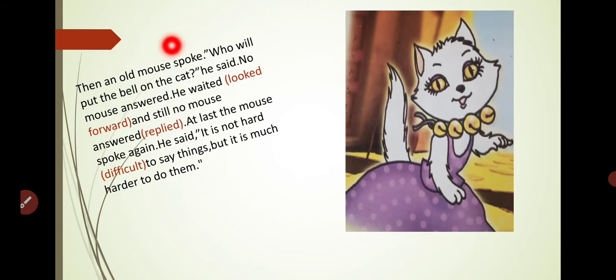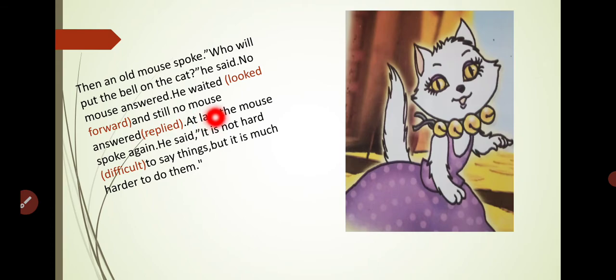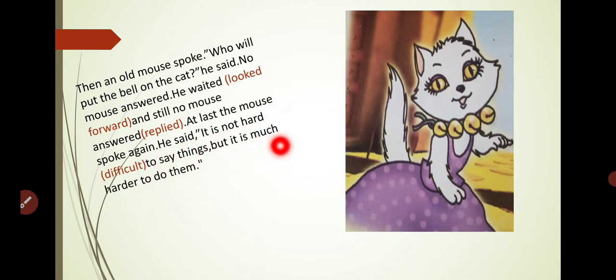This is the last paragraph: 'Then an old mouse spoke: who will put the bell on the cat? he said. No mouse answered. He waited, and still no mouse answered. At last the mouse spoke again. He said: it is not hard to say things, but it is much harder to do them.'